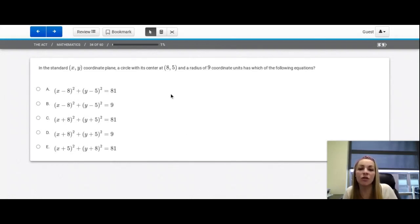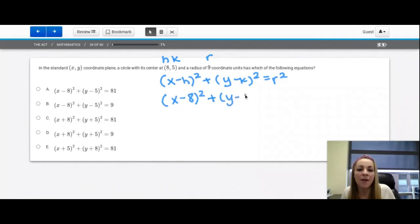The equation for a circle is the quantity (x minus h) squared plus the quantity (y minus k) squared equals the radius squared. The center has parameters h and k and 9 is the radius r. Let's plug those into this equation. (x minus 8) squared plus (y minus 5) squared equals 9 squared. And 9 squared simplifies to 81. So I'm looking for this, and I can see that that's the first option A.